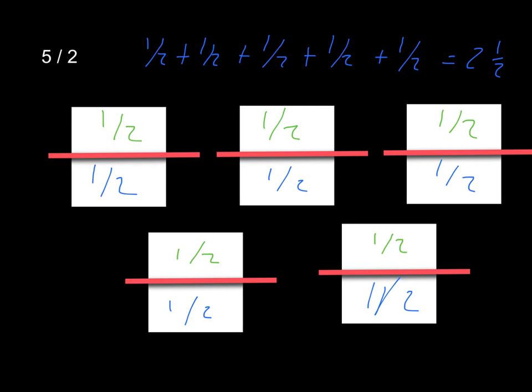And the last one — try five halves. When I solve this, I drew five rectangles and split them each into two pieces. So I have five halves. If I do half plus half, I have one, plus another half is one and a half, plus another half is two, plus another half is two and a half, which is my solution. Remember: as we write a fraction, the top number is divided by the bottom number. So five halves is the same as five divided by two.